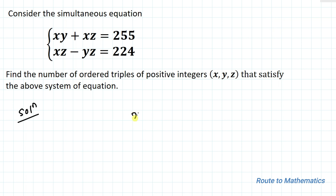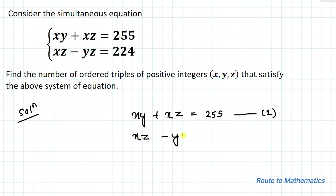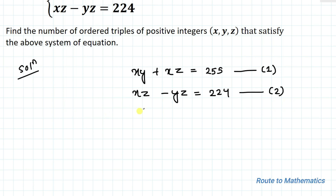We have x·y + x·z = 255 as our first equation, and x·z - y·z = 224 as our second equation.